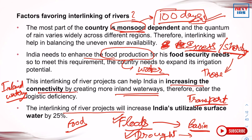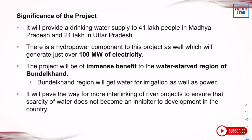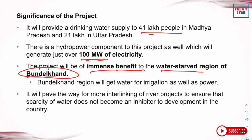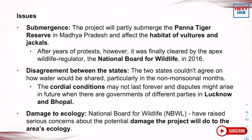Interlinking of rivers will increase India's utilizable surface water by 25%, capturing river water that currently flows unused into the ocean. It can also lead to generation of 34,000 megawatts of electricity. This project will be of immense benefit to the water-scarce regions of Bundelkhand and will pave the way for more interlinking river projects in the future.